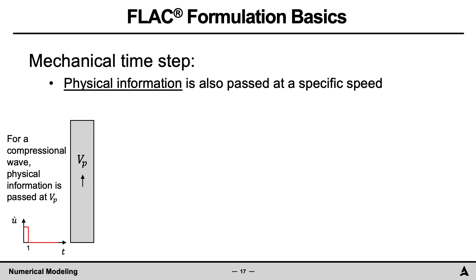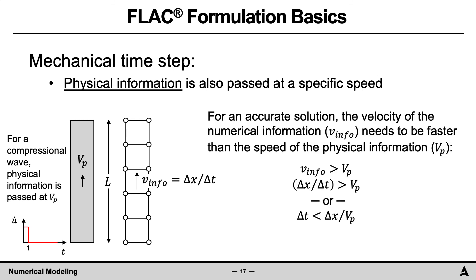Set another way for a compressional wave, physical information is passed at Vp. For an accurate solution for a mesh, such as shown here, the velocity for which the numerical information is passed must be faster than the speed of physical information. Thus, the time step dt must be less than the element size divided by the P wave velocity. In FLAC, this value is further reduced to 0.8 times the element height divided by the P wave velocity.